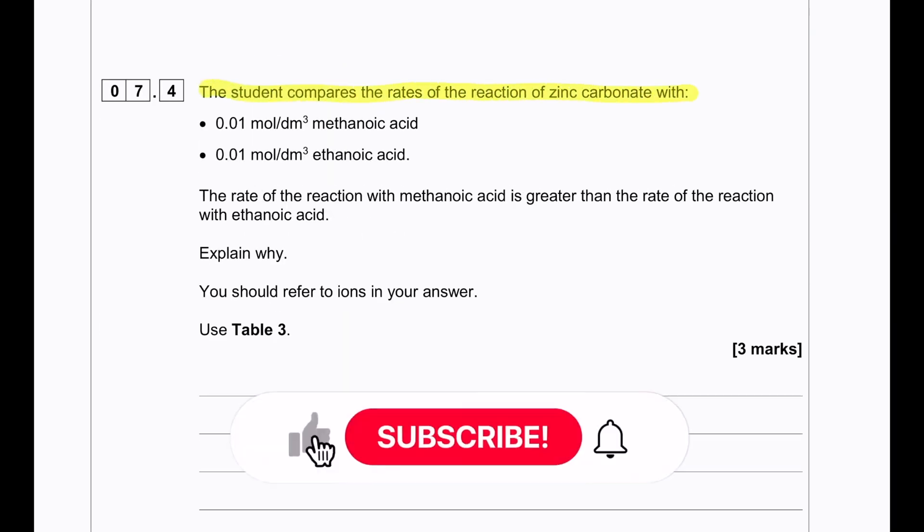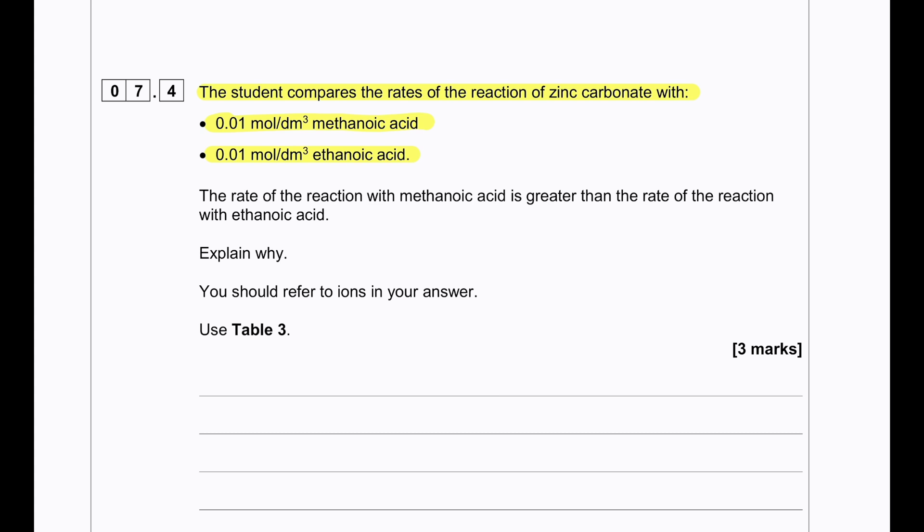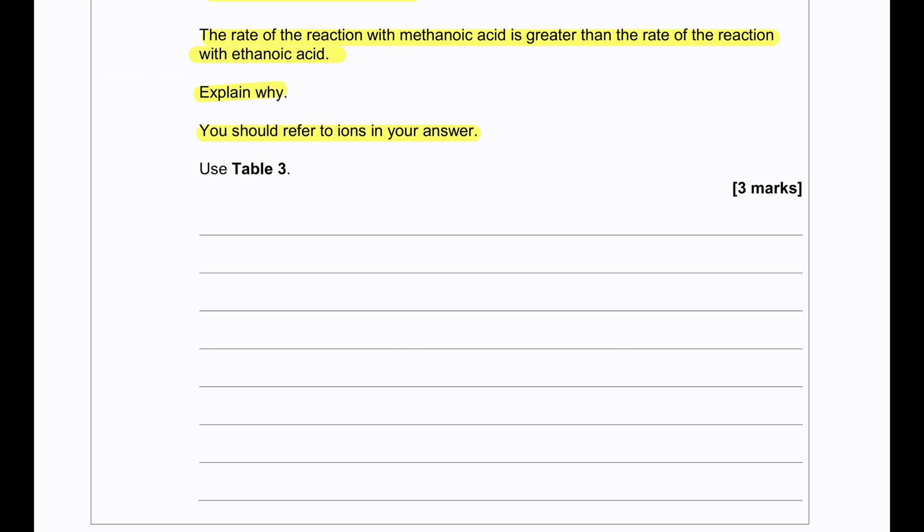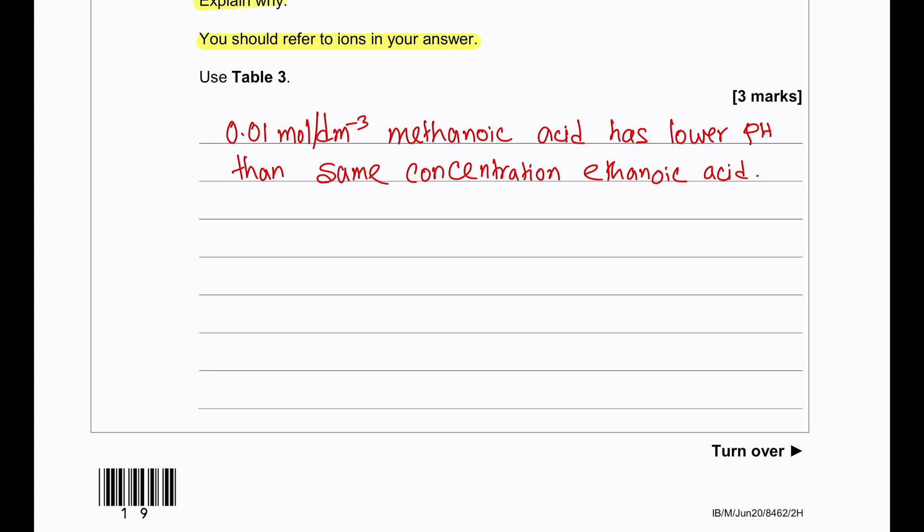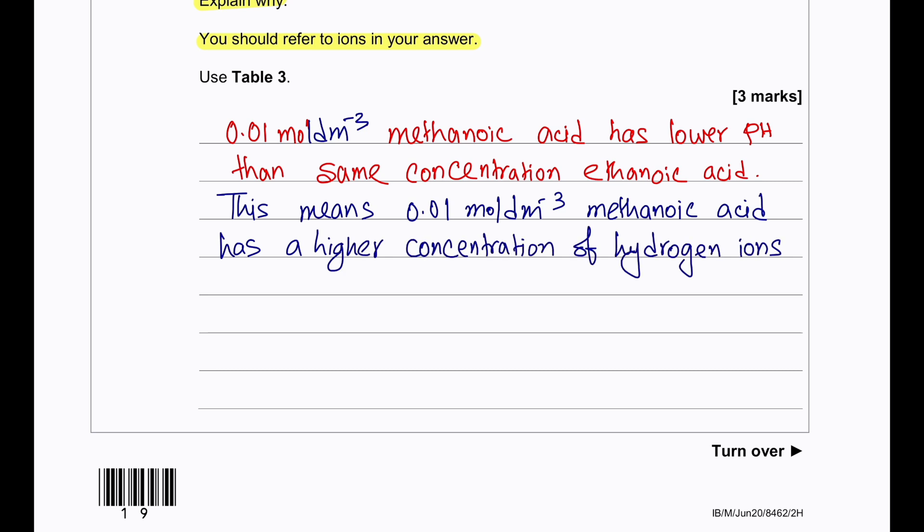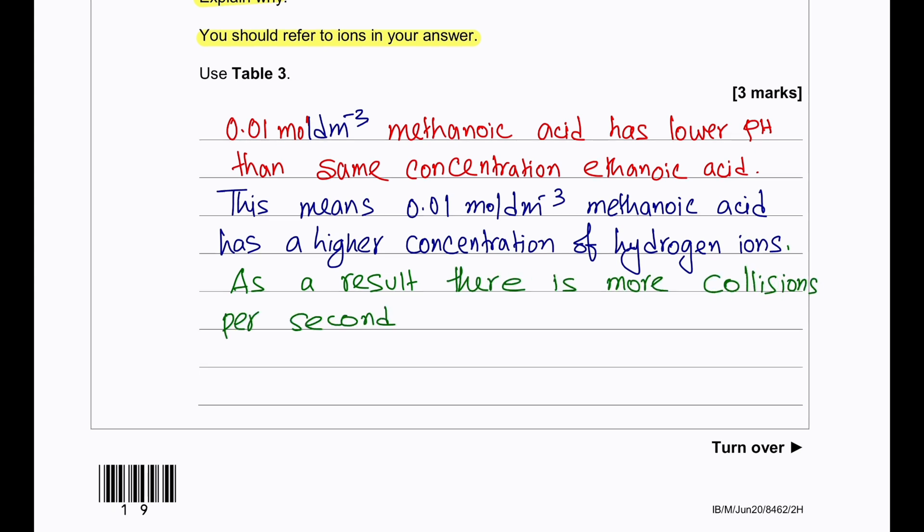The student compares the rate of reaction of zinc carbonate with 0.01 mol per dm cubed methanoic acid and 0.01 mol per dm cubed ethanoic acid. The rate of the reaction with methanoic acid is greater than the rate of the reaction with ethanoic acid. Explain why. We should refer to the ions in our answer. So 0.01 mol per dm cubed methanoic acid has a lower pH compared to that of 0.01 mol per dm cubed of ethanoic acid. 0.01 mol per dm cubed methanoic acid has a higher concentration of hydrogen ions because it has a lower pH and thereby it will have more collisions per unit time with the zinc carbonate molecules and as a result the rate of reaction will be faster.